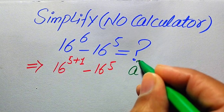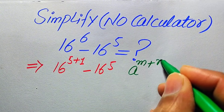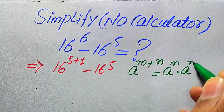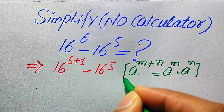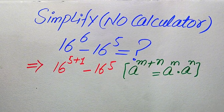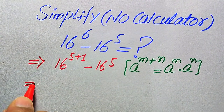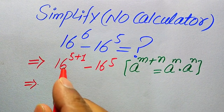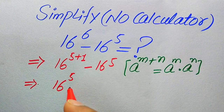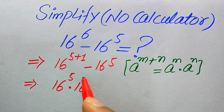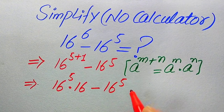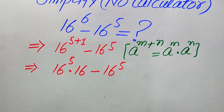In the next step we use the exponential law: a to the power of m plus n equals a to the power of m multiplied by a to the power of n. According to this rule, we rewrite 16 to the power of 5 plus 1 as 16 to the power of 5 multiplied by 16 to the power of 1, minus 16 to the power of 5.